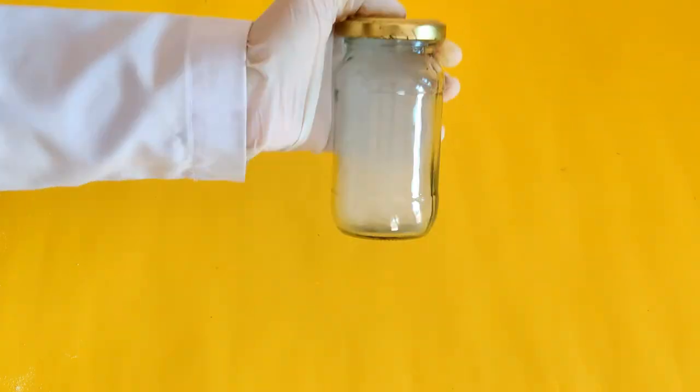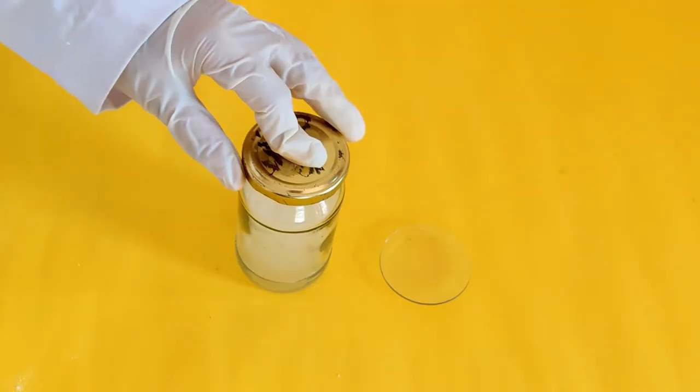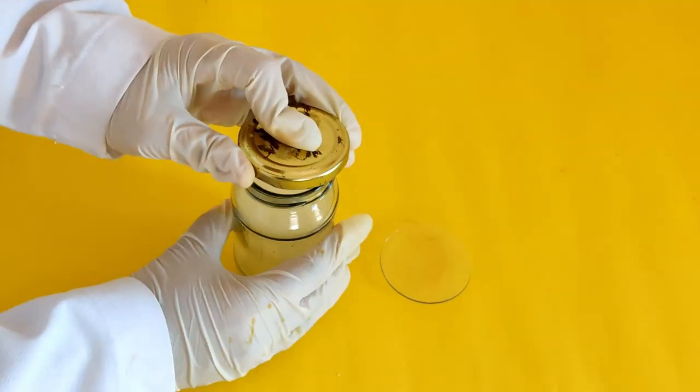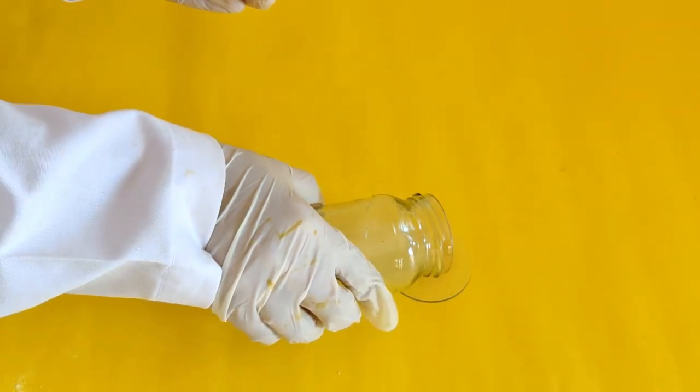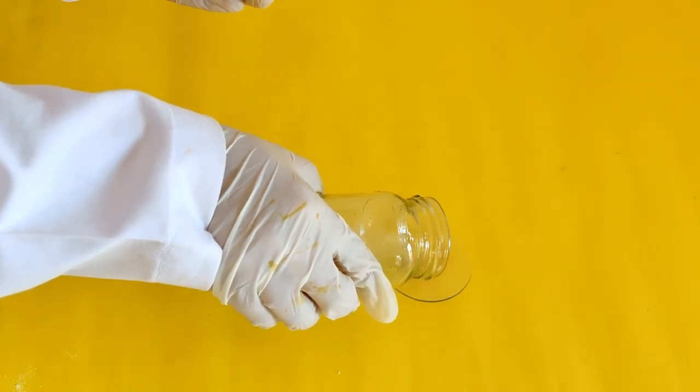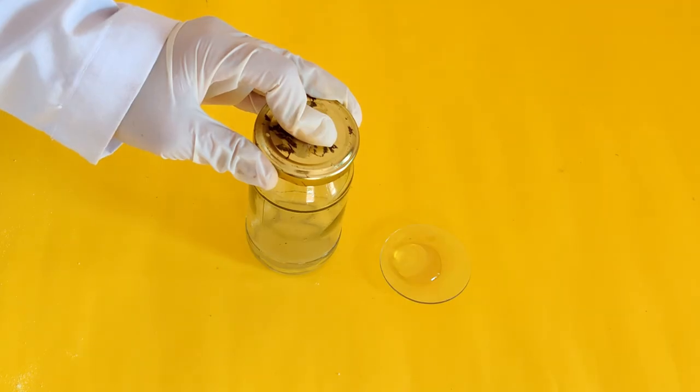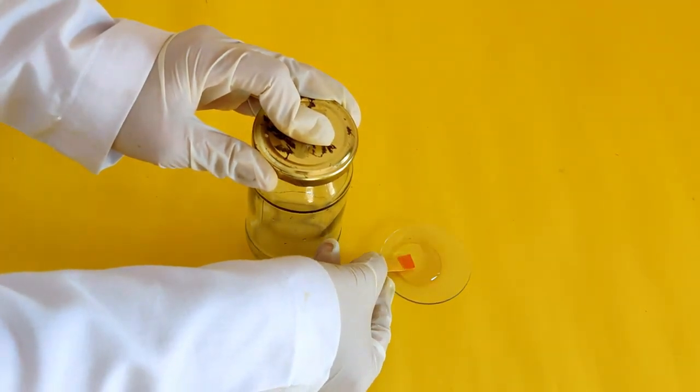Shake the glass jar so that the gas mixes with the water in it. Now, empty the content of the glass jar into the watch glass. Dip the pH paper in the watch glass and observe the change in its color.